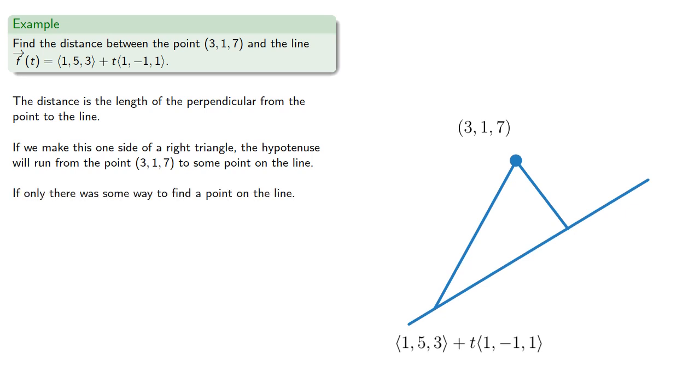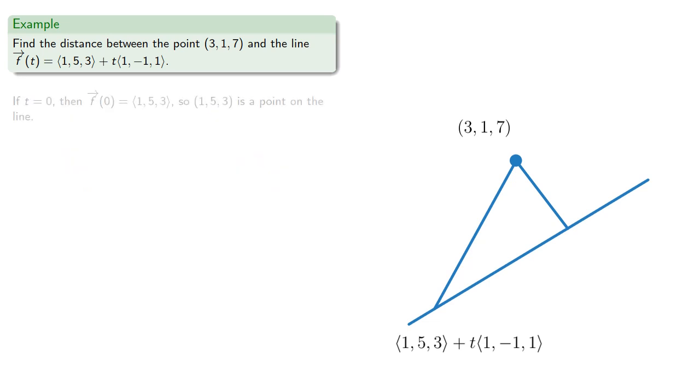If only there was some way to find a point on the line. Oh wait, we have the vector equation. So if t equals zero, then we have a point on the line.